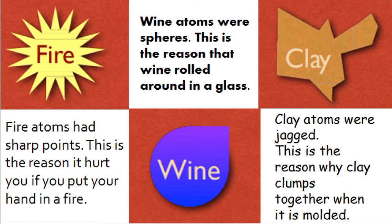Democritus proposed that the shape of an atom determined the properties of that substance. Fire atoms had sharp points — this is the reason it hurt you if you put your hand in a fire. This is also the reason why clay clumps together when it is molded.